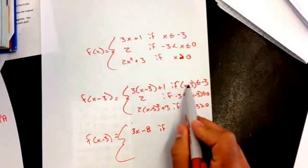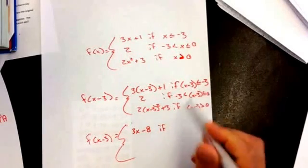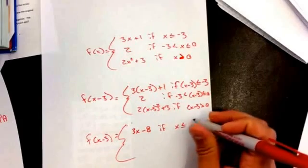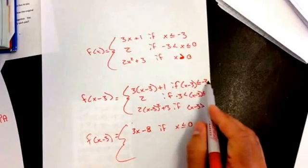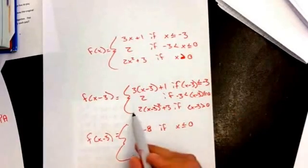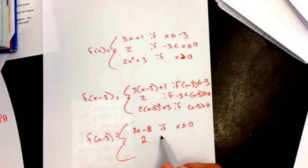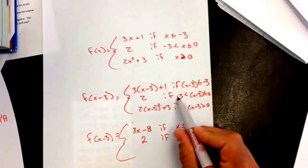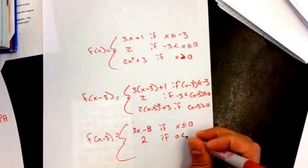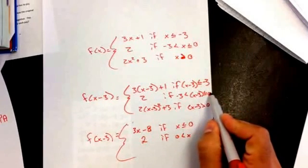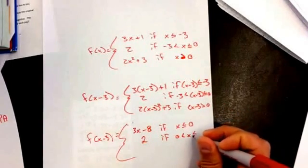If, I want to get the x by itself, so I'm going to add the 3 over. So if x is less than or equal to 0, because if I add the 3 to the negative 3, it gives me 0. This one, it didn't change because I didn't have an x in there. If, I'm going to add the 3 over, and it's going to be 0 is less than x, and I'm going to add the 3 over here, which is going to give me less than or equal to 3.